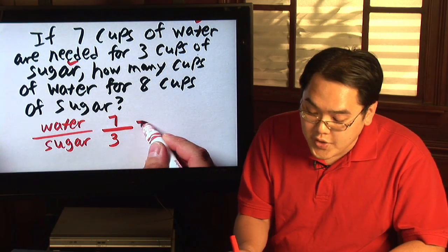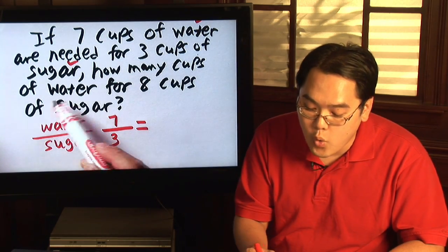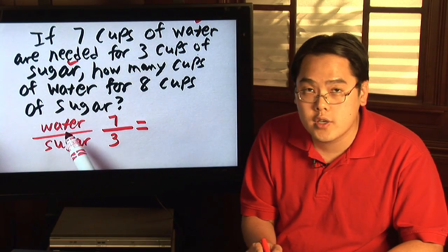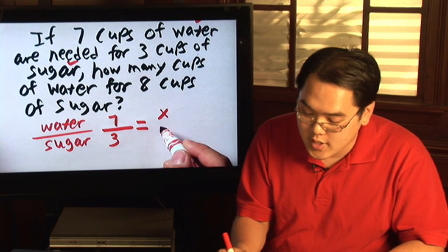And then, on the other side, because you want to know how many cups of water are needed, because water you decided for the numerator is the numerator, you would put x on top.